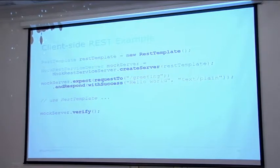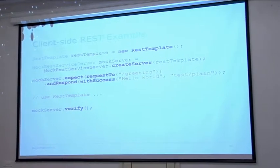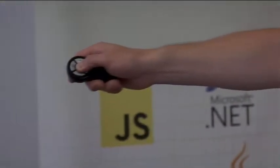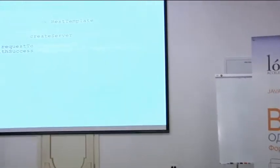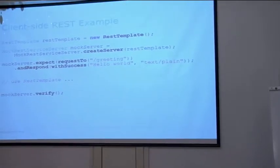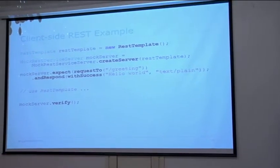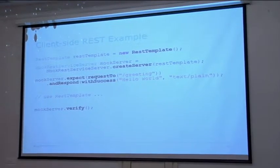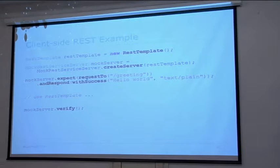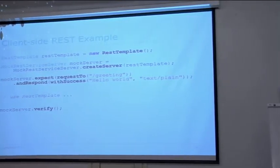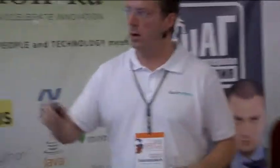Moving on to client-side REST testing. You create a Spring RestTemplate just as you normally would. Instead of MockMvc, you use MockRestServiceServer: call 'MockRestServiceServer.createServer(restTemplate)'. On that mock server, you set expectations — expecting your code to perform a request to a specific path and respond with, for example, success and a MIME type. Then invoke your client code that uses the RestTemplate, and at the end call 'verify()' on the mock server to confirm your client code used the RestTemplate in the ways you specified.